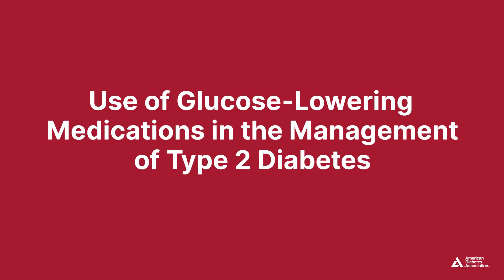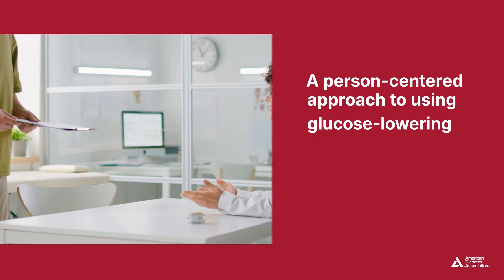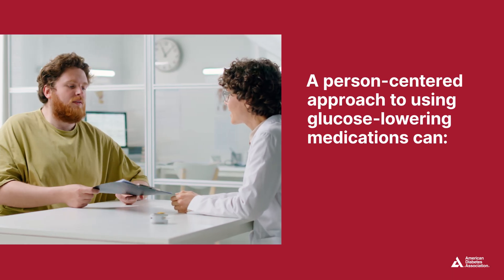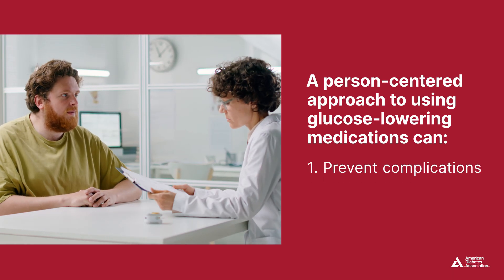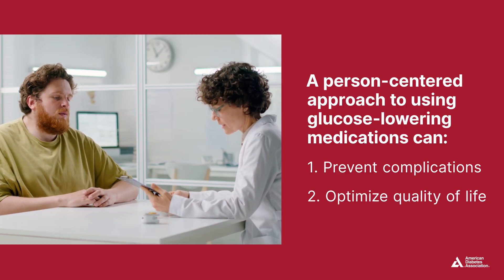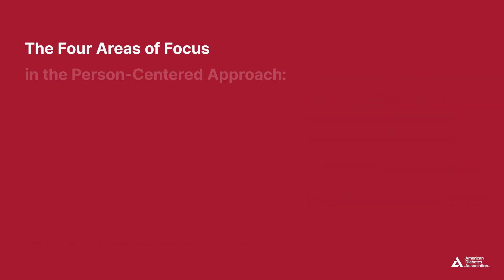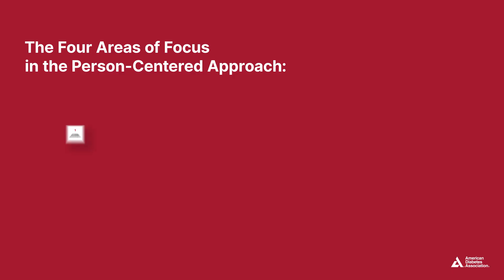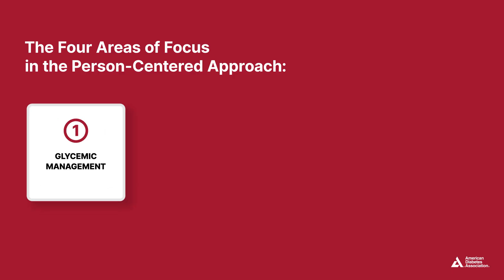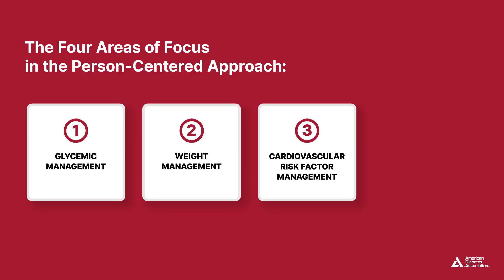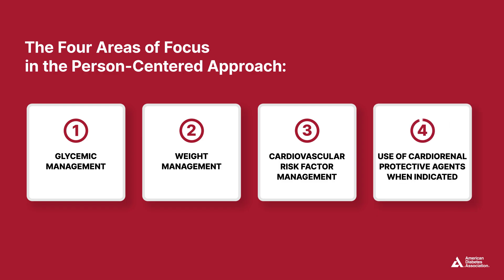When you're using glucose-lowering medications to manage type 2 diabetes, a person-centered, holistic approach is the standard of care for good reason. It can prevent complications and optimize quality of life. But to achieve these goals, you need to address four specific areas: glycemic management, weight management, cardiovascular risk factor management, and the use of cardio-renal protective agents when indicated.